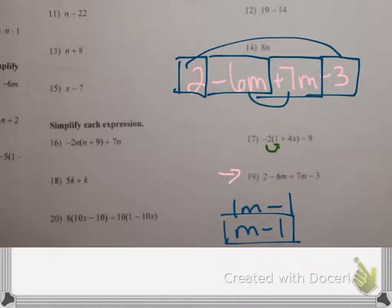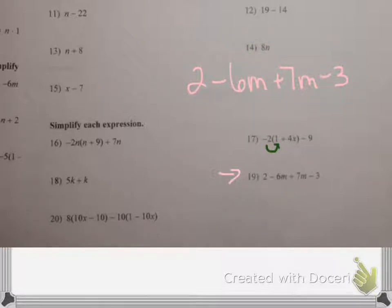Alright, and then finally, this one down here. I think we're going to need a little room to get that done. Alright, so. 8 times 10x is 80x. I'm distributing. Positive 8 times negative 10 is negative 80.